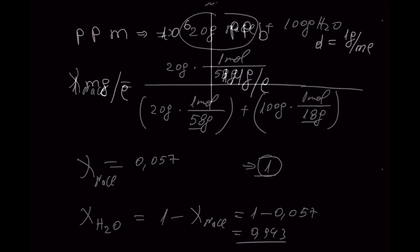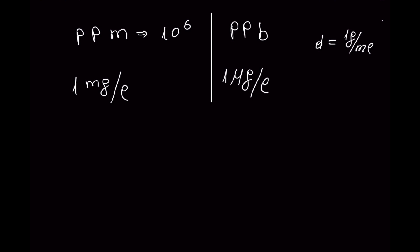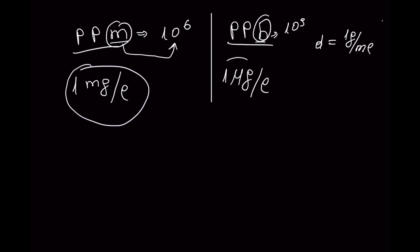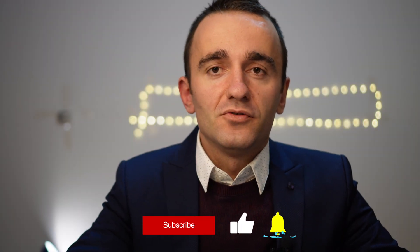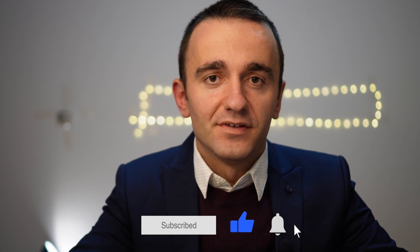The last type of concentration I will mention here is ppm and ppb. PPM means parts per million — that is 10⁶. PPB means parts per billion — that is 10⁹. PPM is expressed as 1 milligram per liter, and PPB as 1 microgram per liter. These units apply because the density is assumed to be 1 g/mL for extremely diluted solutions. Thank you for watching, and see you in the next video!